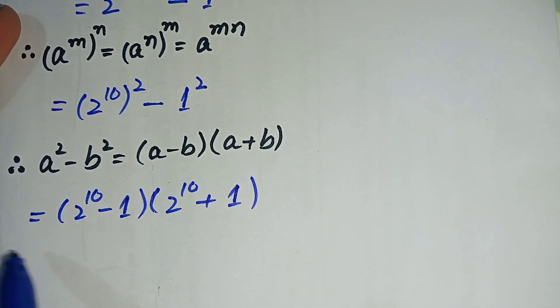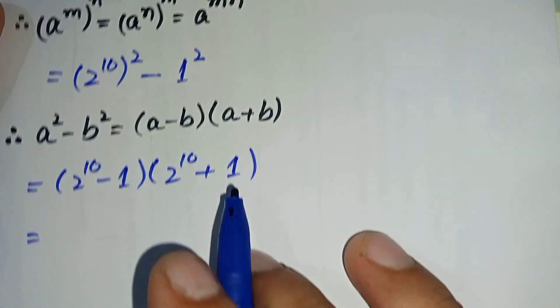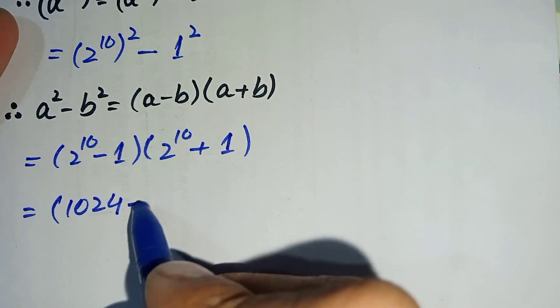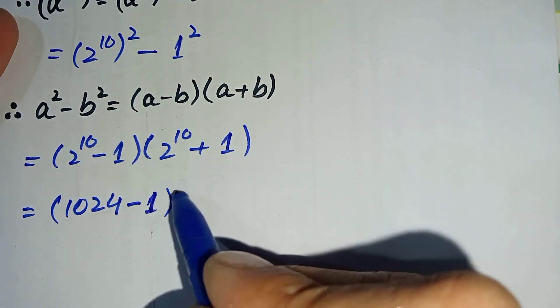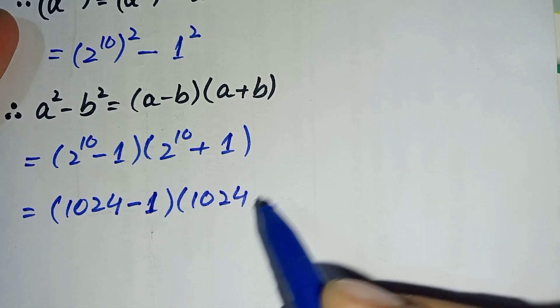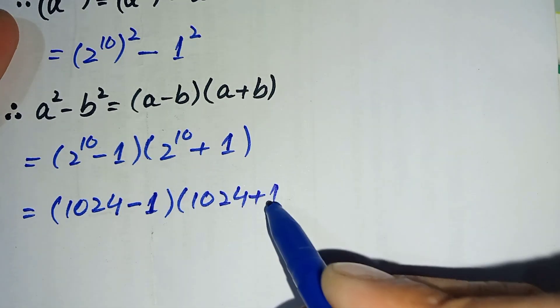Now, as we know, 2 raised to power 10 is equal to 1024. So this becomes (1024 - 1) times (1024 + 1).